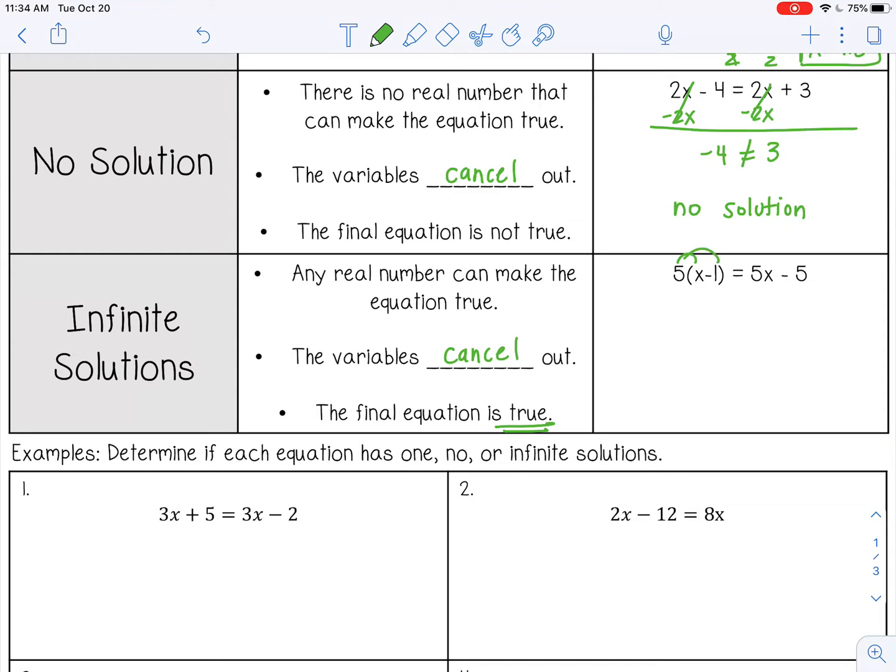So if I were to solve this, I could distribute, so 5x minus 5. And you can already see right there, the equation is exactly the same on both sides. That's a good indication that it's going to have infinite solutions. So if I subtract 5x from both sides, they're going to cancel out. And I have negative 5 equals negative 5. That means there are infinite solutions to this problem, meaning I can plug in any real number, and the equation will be true.